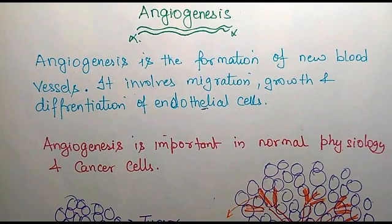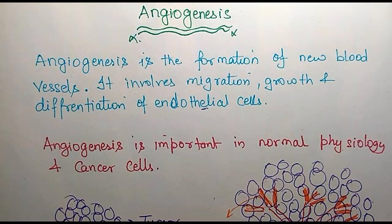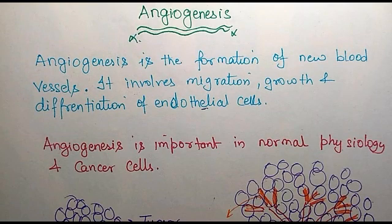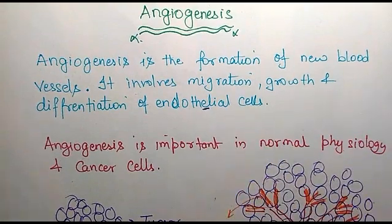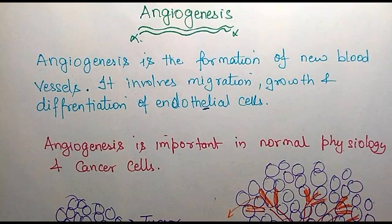Hello students, today we are talking about angiogenesis. Angiogenesis is defined as the formation of new blood vessels, and this process involves the migration, growth, and differentiation of the endothelial cells. These endothelial cells are the cells which line the inner side of the blood vessels. Angiogenesis is a common phenomenon — a normal physiological process involved in the formation of normal blood vessels during organ formation, as well as in cancer.